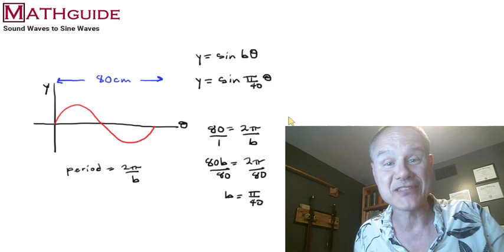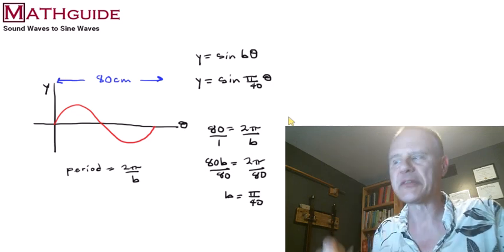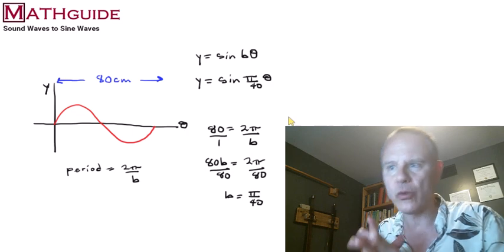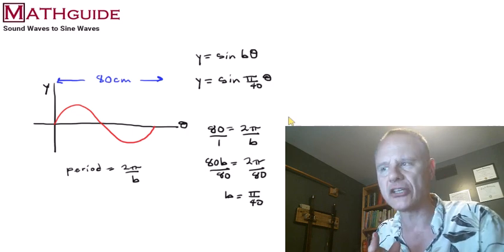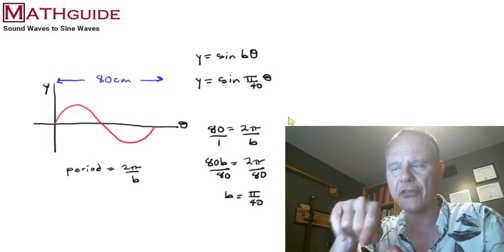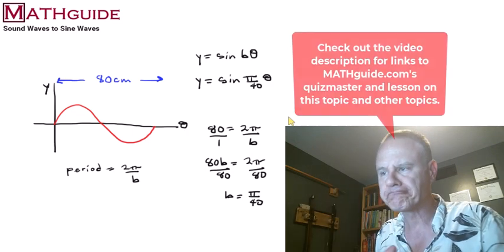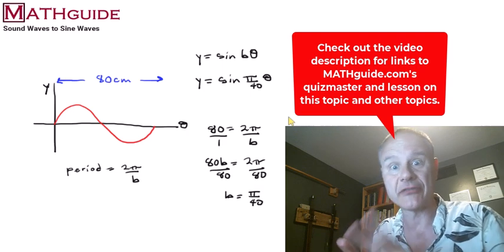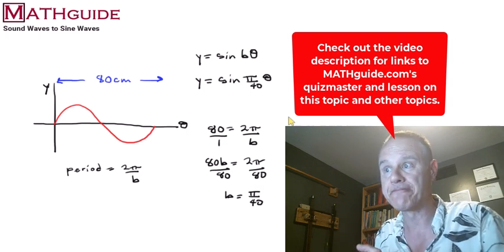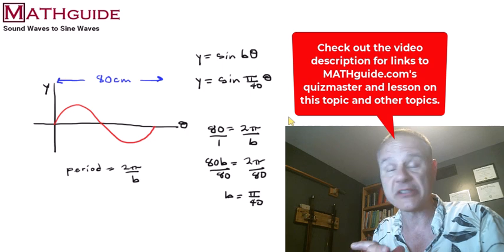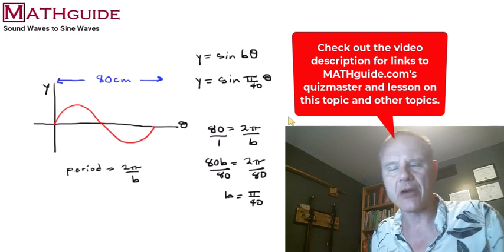Some people like to use x for the independent variable. But I'm specifically using theta because the Quizmaster I have will check to see if you know how to do it. And the Quizmaster uses theta. I'm going to put that link for the Quizmaster in the description of the video so you can find that link. And you can check it out. You can test yourself to see if you now understand this. It's a fairly simple relationship. And it's not that hard to use, really. Some simple math going on there.